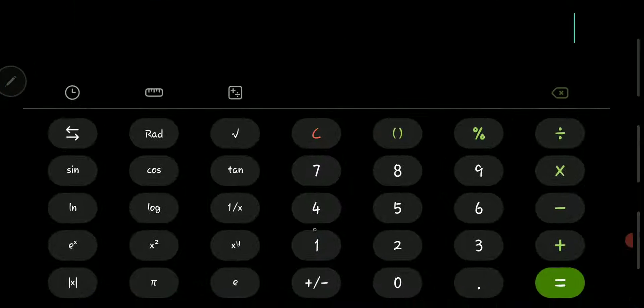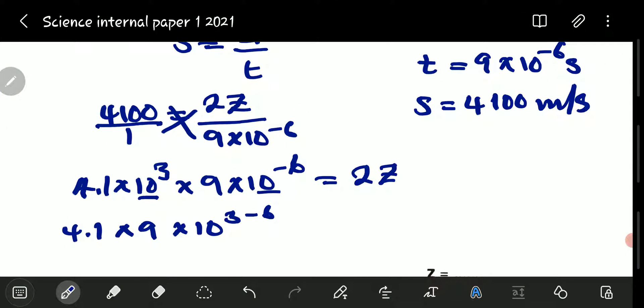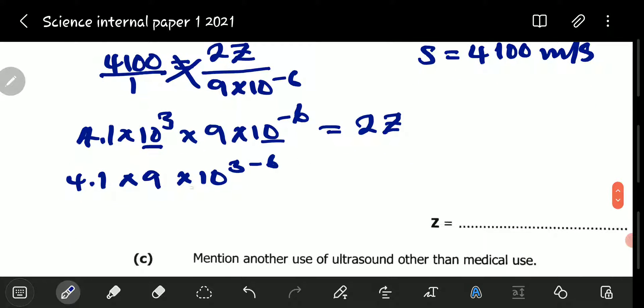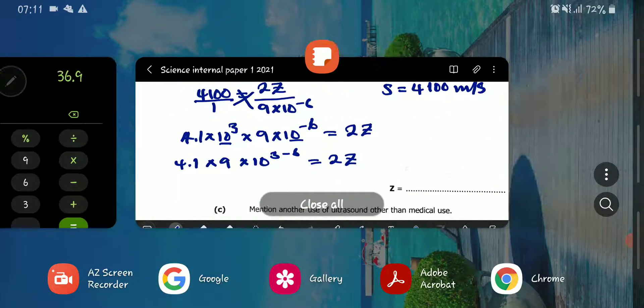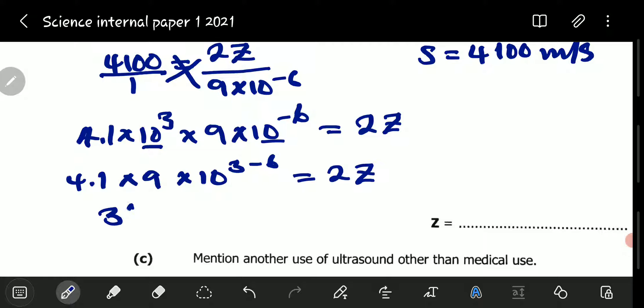And this side, 4.1 multiplied by 9, which is 36.9. So, I'm going to have 36.9 times 10 to the power of negative 3 is equal to 2Z. We can't leave it hanging like that. Times 10 to the power of negative 3 is equal to 2Z over 2.